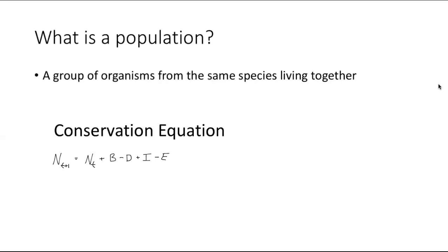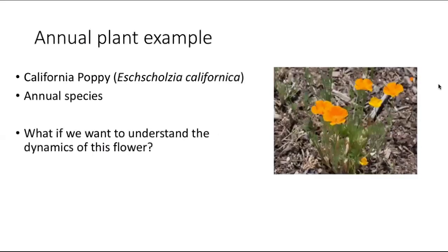That's always our starting point when thinking about how to model something. To give you an example, we're going to think about an annual plant species — the California poppy, which is actually the state flower of California. It's an annual species, so it lives for one year, produces seedlings, and then dies. We want to understand the dynamics of this particular flower, thinking about exponential growth. To do this, we're going to set up a population growth model. Before setting up the model itself, one really useful tool is to draw a diagram to help us think about how this population is operating.